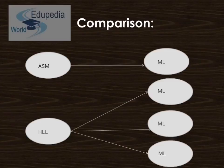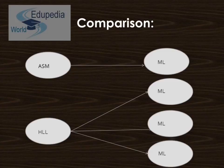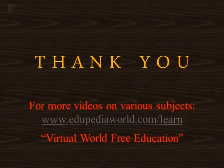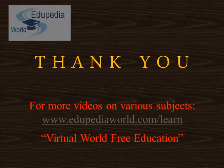Now let us see a general comparison showing machine language generation by the assembler — there is a one-to-one correspondence. From high-level language programs, when they are interpreted, one single instruction has to be translated into multiple machine language instructions. Thank you for watching this video on edupediaworld.com.